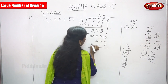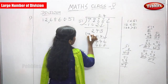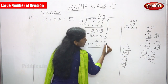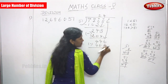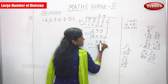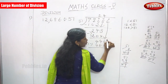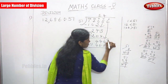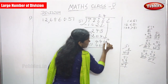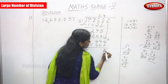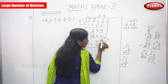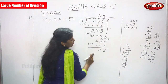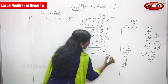Now subtract 408 from 446. 6 minus 8 — you can't subtract since 6 is less, so borrow. It becomes 16 minus 8 = 8. The tens digit becomes 3. 3 minus 0 = 3. 4 minus 4 = 0. The remainder is 38.